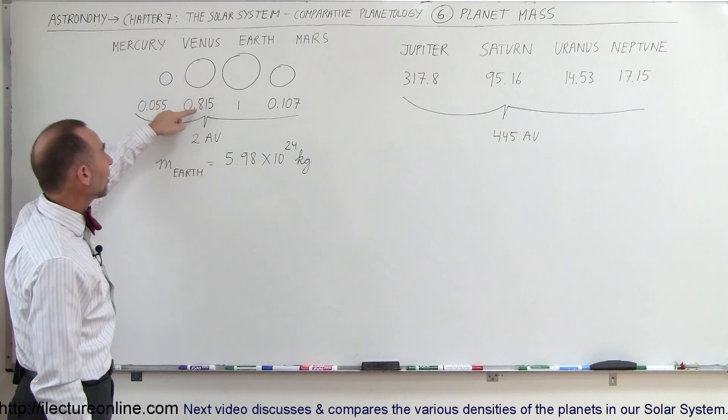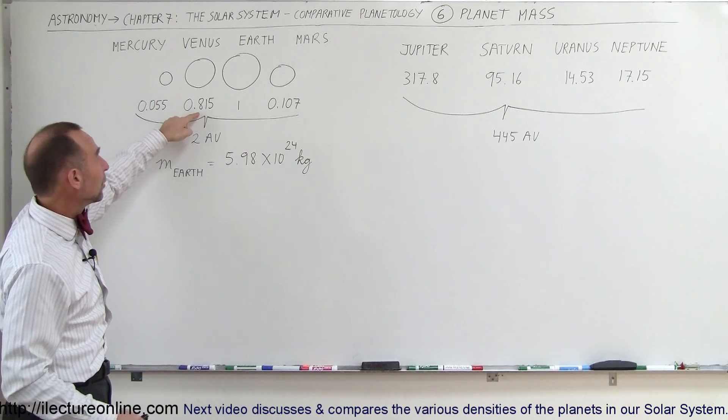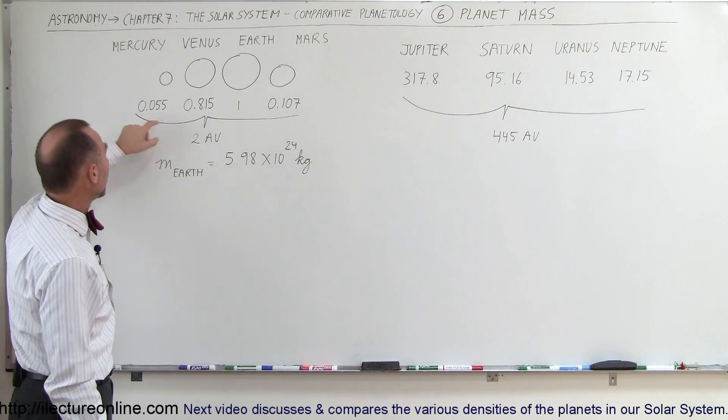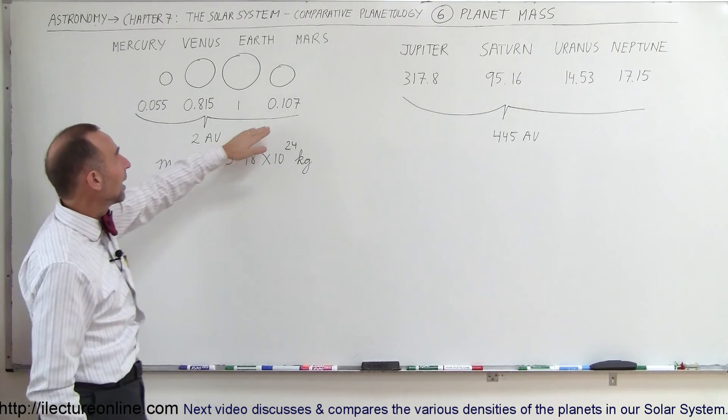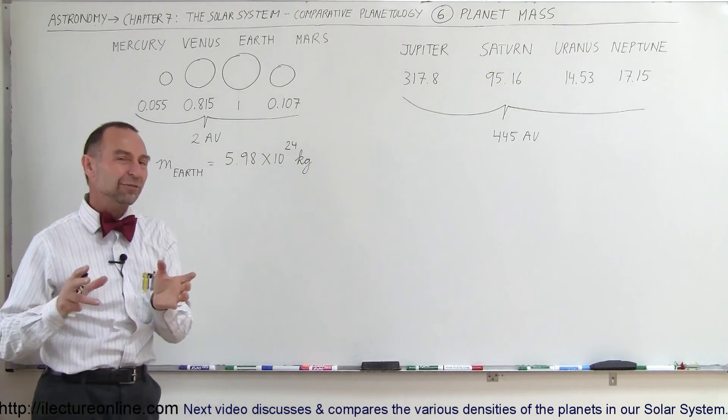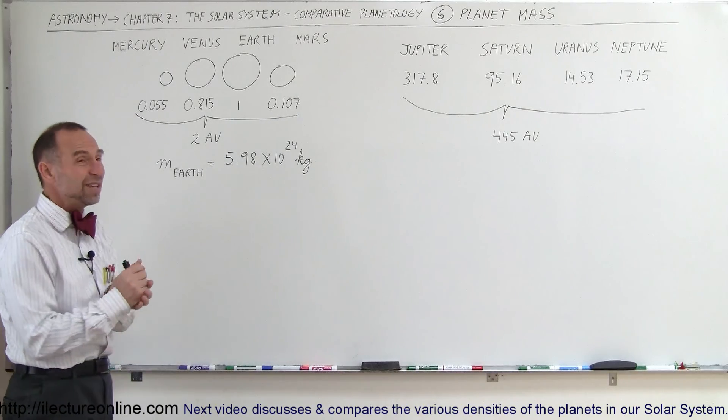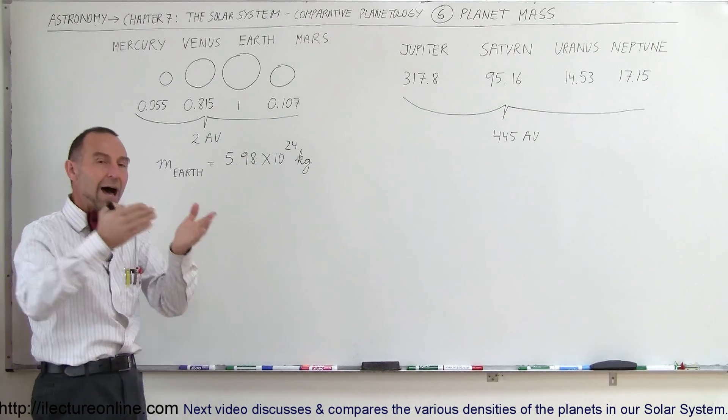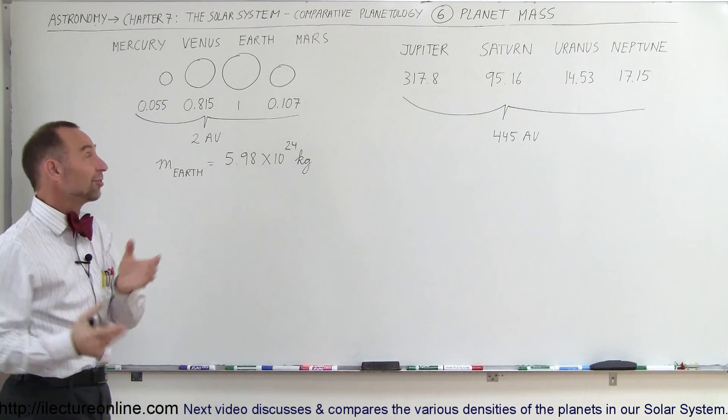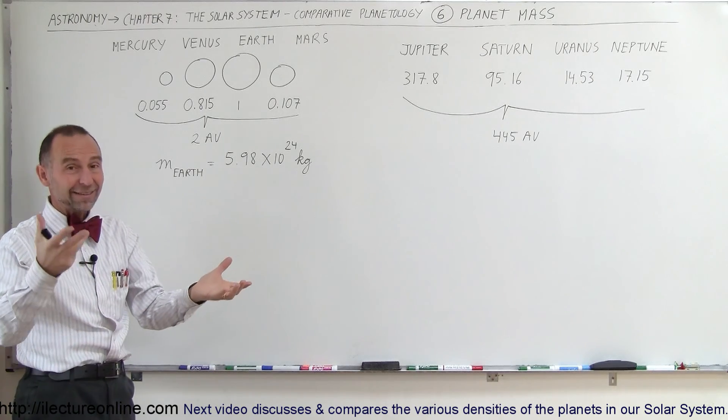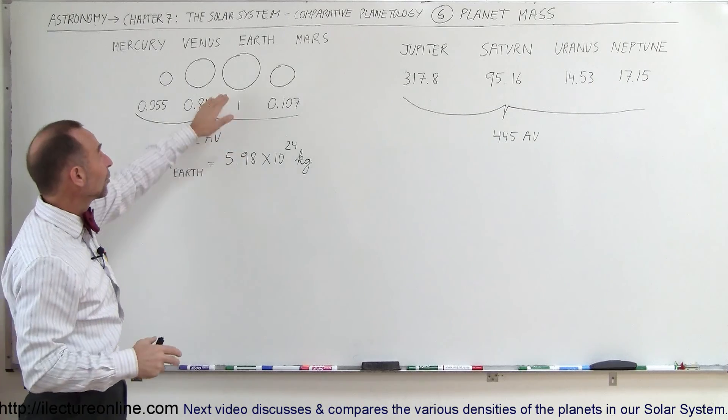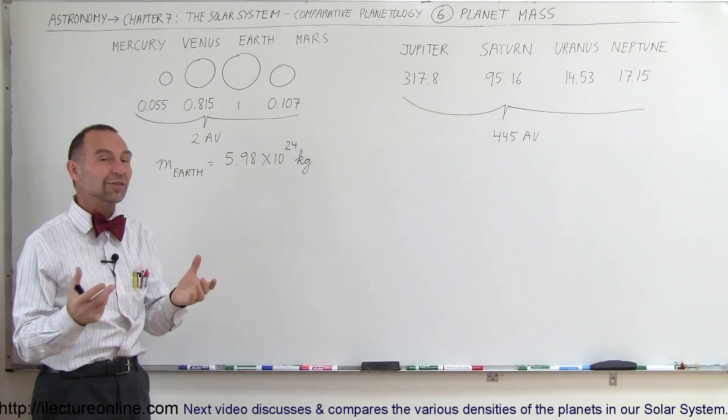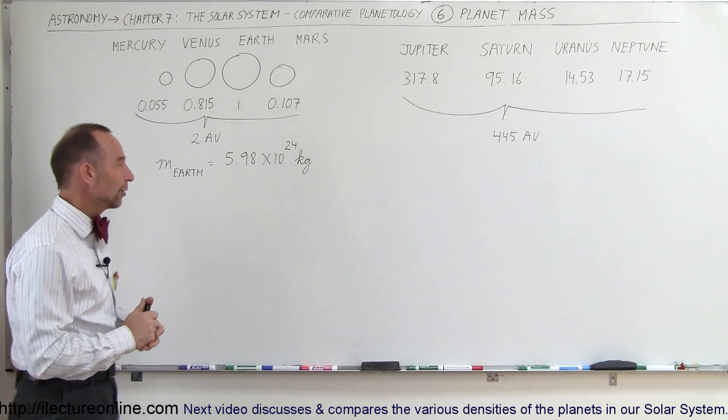Compared to that, Venus has a mass that's about 81.5% the mass of the Earth. Notice that Mercury has a mass of about 5.5% the mass of the Earth, and Mars has the mass of roughly 10% the mass of the Earth. Which means if you were to put the Earth on a scale, it would take about 10 times the mass of Mars, or 10 Marses, in order to balance out one Earth. And it would take almost 20 Mercurys to balance out the mass of the Earth.